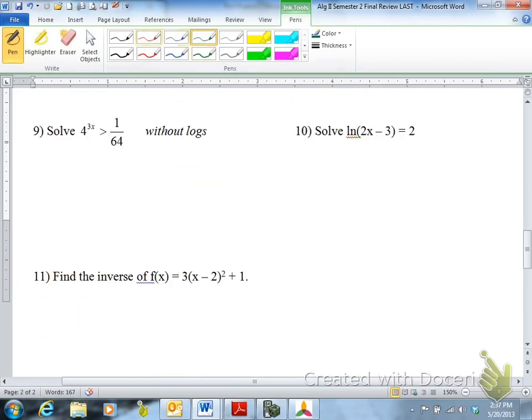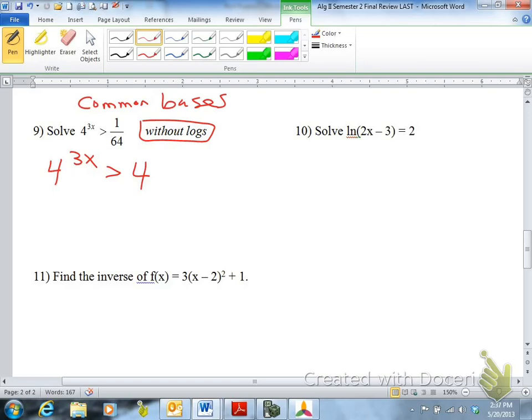Solve number 9 without logarithms, without log. One way to do that is to make common bases. So you have 4 to the 3x is greater than, how can we write 1/64th with a common base? A common base would be a 4. So 4 to what exponent is 1/64th? Maybe 4 to the 3rd is 64. 4 to the negative 3rd is 1/64th. So we're substituting this 1/64th for 4 to the negative 3rd. So we have 3x is greater than negative 3. x is greater than negative 1.